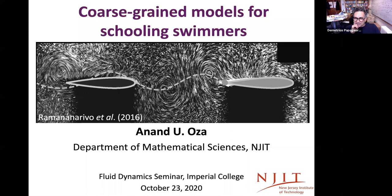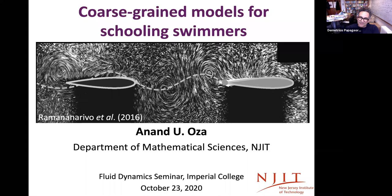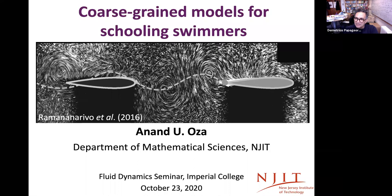Anand did his undergraduate degree at Princeton University, and after that he spent a year doing Part III at Cambridge, at Churchill College. After Cambridge, Anand moved to MIT where he did his PhD with John Bush and Ruben Rosales. He then received an NSF postdoctoral fellowship in mathematical sciences, which he spent at the Courant Institute in New York, before moving to New Jersey Tech, which has one of the largest applied mathematics groups in a mathematics department in the US.